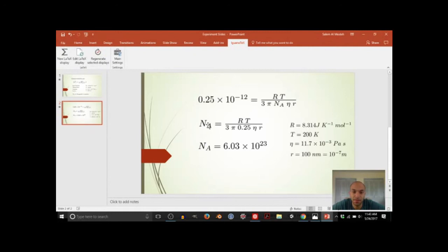And that gives us 6 times 10 to the 23, which is very close to the actual number. And it's very remarkable that just by watching a little sand particle move, we were able to calculate what Avogadro's number is, which is basically just how many particles are there right here.